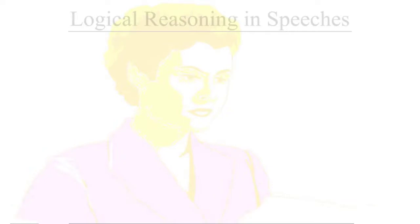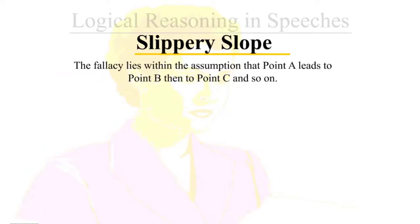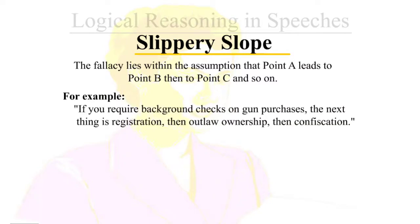Slippery slope: the fallacy lies within the assumption that point A leads to point B, then to point C, and so on. For example, 'If you require background checks on gun purchases, the next thing is registration, then outlawing ownership, then confiscation.'